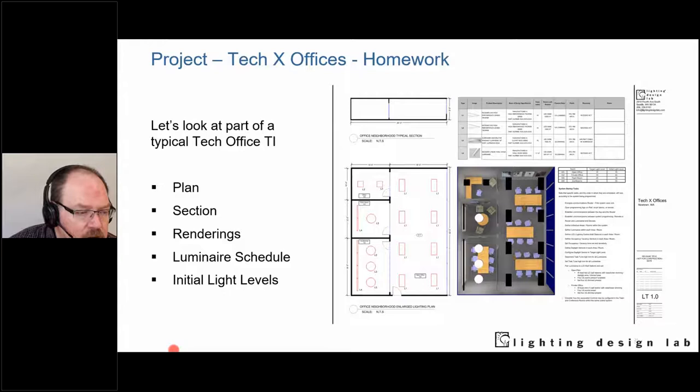In a traditional network lighting controls approach, one control controls many luminaires, versus luminaire-level lighting control where one luminaire is one control zone. With a network lighting control system, you can have every light fixture be its own zone — it's just less common. You would also have a smaller number of sensors, such as occupancy, vacancy, and daylight sensors, talking to the system.